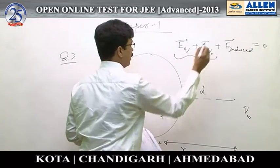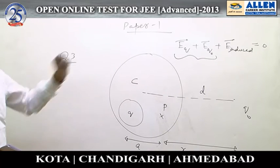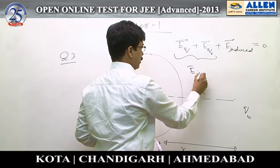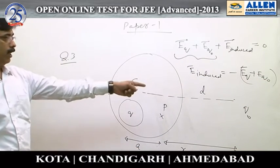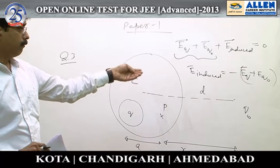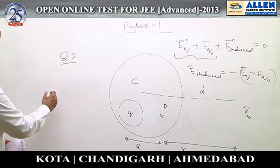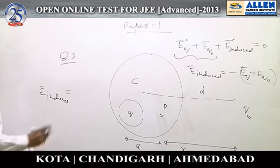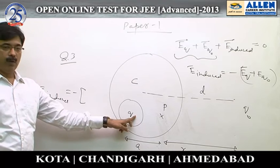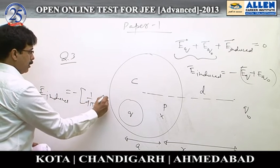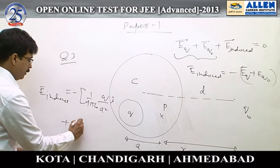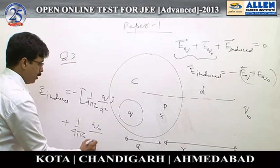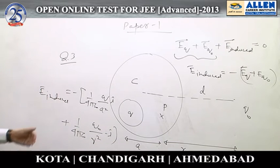We are indirectly required to find the resultant of the field of charge Q at the center of the cavity and the field of charge Q₀. Thus E_induced = −(E_Q + E_Q₀). Using the formula for point charges: E_induced = −[1/(4πε₀) · Q/A² î + 1/(4πε₀) · Q₀/R² (−î)]. This is the resultant induced field, and our answer is option C.